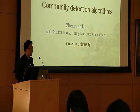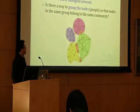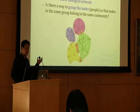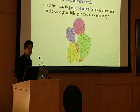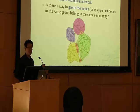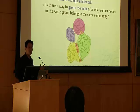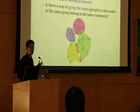I'm going to talk about community detection algorithms. Here is the simple problem: we are given a social network represented by a graph. Each node represents a person, and two nodes are connected if and only if the two people know each other. The goal is to chop the graph into pieces so that each piece represents a community.